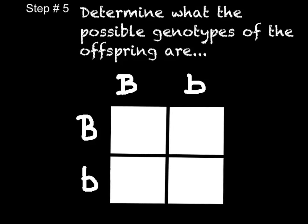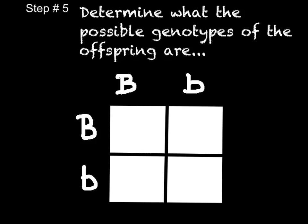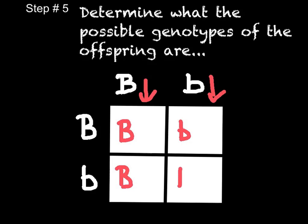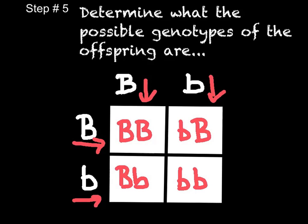At that point you have to determine what the possible genotypes of the offspring are. We are filling in our boxes. The easiest way to do this is the guys on top fall down — so this big B is going to fall down, the little B is going to fall down. Then we do the other parent: the guys on the side run across, so this one runs across in each box and this one runs across in each box.